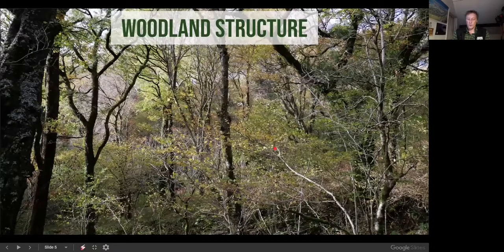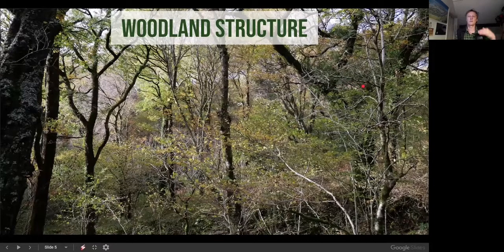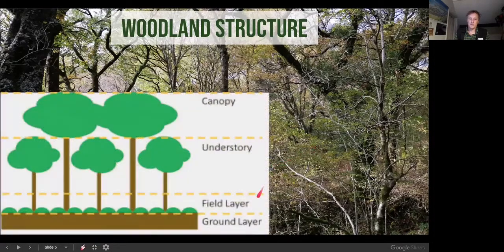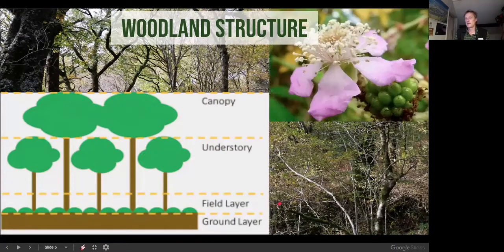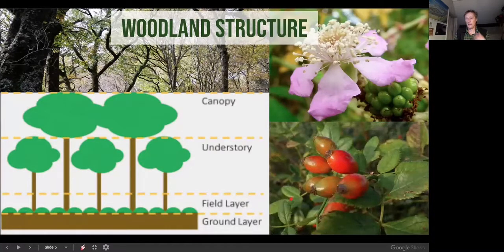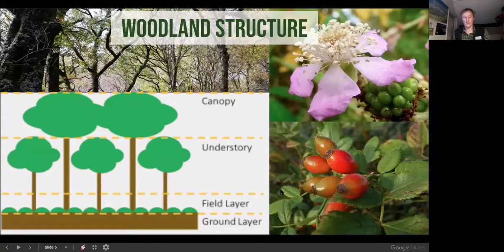Looking at woodland structure in temperate Britain, we can broadly describe tall canopy-forming trees, a slightly lower understorey of woody shrubs and hazel, a field layer of climbers and creepers like brambles, ivy, honeysuckle, and dog rose, and then the ground layer — the herbs and non-woody plants on the woodland floor — which we'll be describing as we go through the evening.